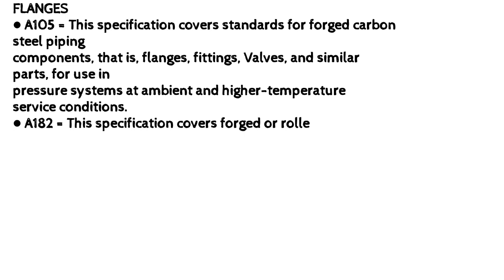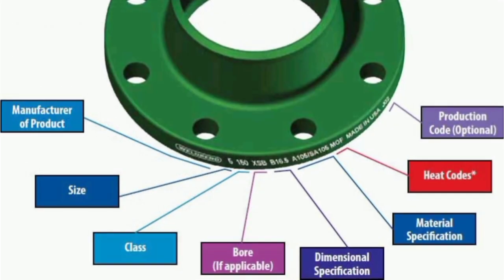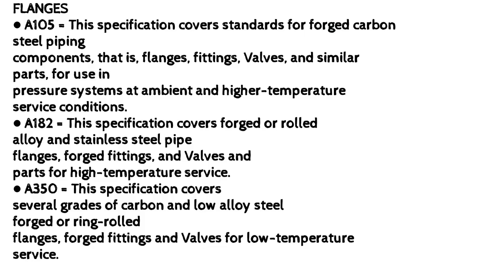ASTM materials — Flanges: A105 covers standards for forged carbon steel piping components and similar parts for pressure systems at ambient and higher temperature service conditions. A182 covers forged and rolled alloy and stainless steel pipe flanges, forged fittings, and valves and parts for high temperature service. A350 covers several grades of carbon and low alloy steel forged, ring-rolled flanges, forged fittings, and valves for low temperature service.